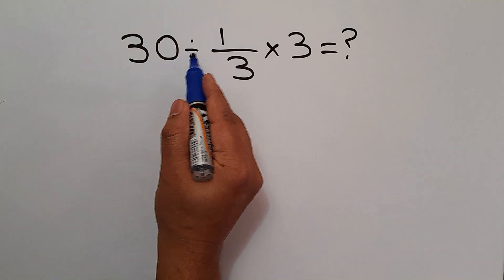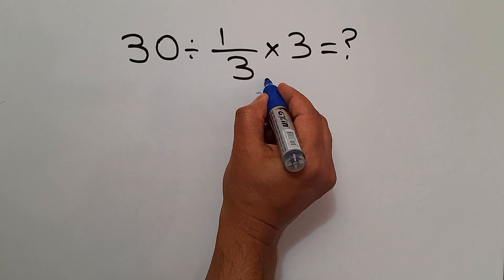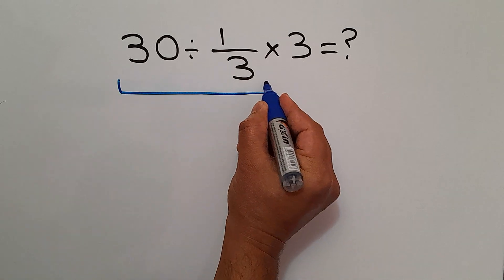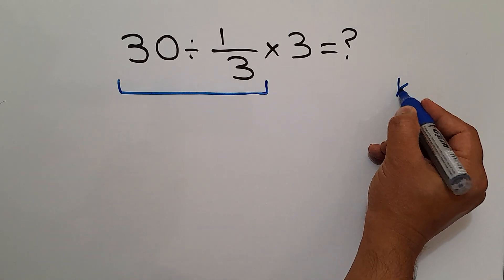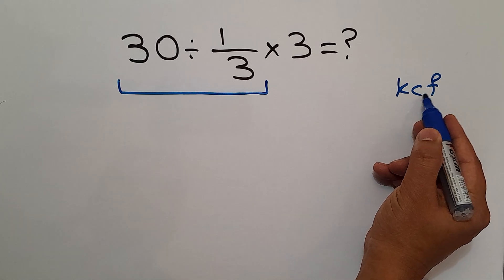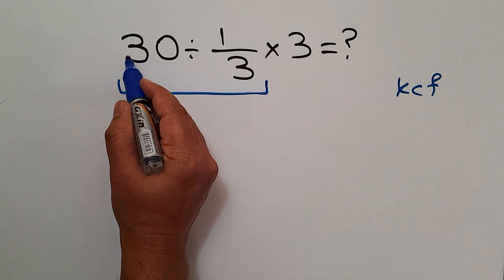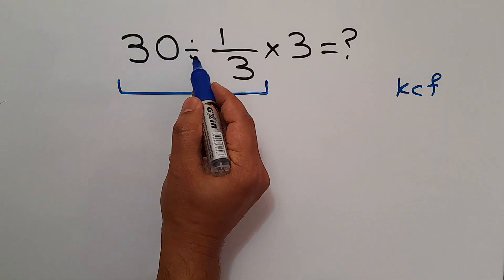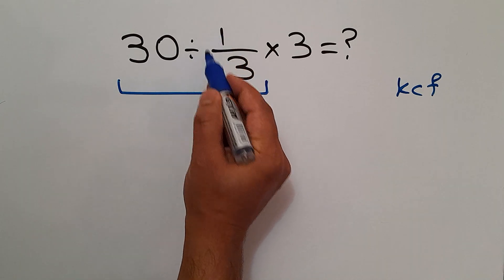30 divided by 1 over 3. So, according to the KCF rule, K stands for keep, C stands for change and F stands for flip. Keep the first fraction, change division to multiplication and flip the second fraction.